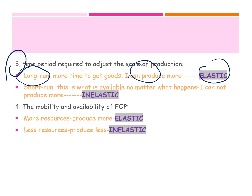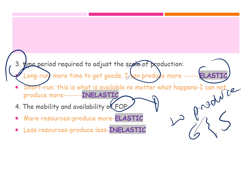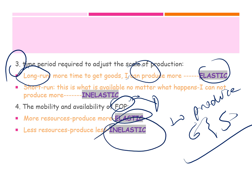The last factor is the mobility and availability of factors of production — FOPs. Remember, the FOPs or resources are needed to produce goods and services. If you have more of them, you can produce more and the supply would be elastic. If you do not have enough inputs or factors of production, you have fewer resources and can produce less — this is why the supply would be inelastic.